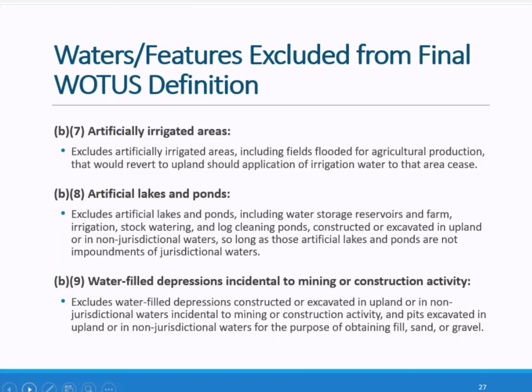One other point about the artificial lakes and ponds exclusion is that if there is a surface water connection between the artificial lakes or ponds, such as a non-jurisdictional ditch, the artificial lakes or ponds are still excluded. For example, off-channel reservoirs that are created in uplands are non-jurisdictional.